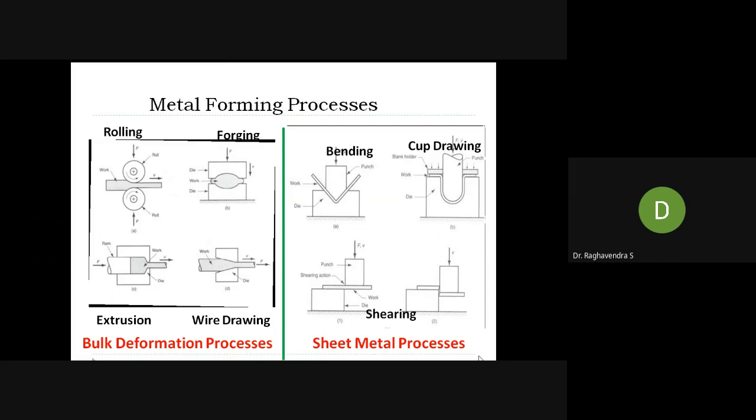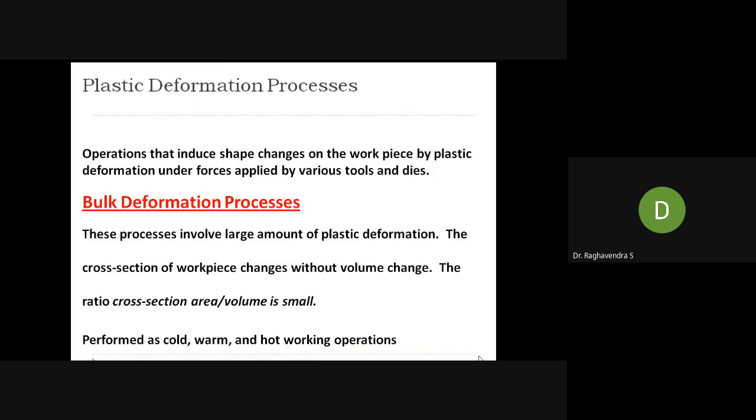In the sheet metal process, there are various operations such as bending, cup drawing, and shearing. Bending may be V-bend or U-bend; cup drawing is another term for it. Shearing may be a scissor-type cut producing L-shape, I-shape, or similar profiles. All these processes will be discussed.